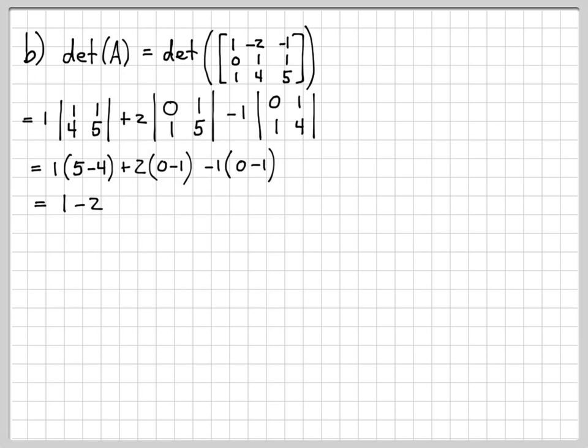we have 1 minus 2 times -1 gives me a -2, and then a -1 times a -1 gives me 1. And this is equal to 2 minus 2, which is 0.